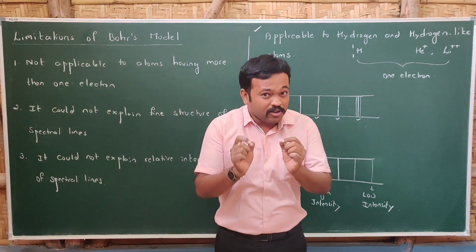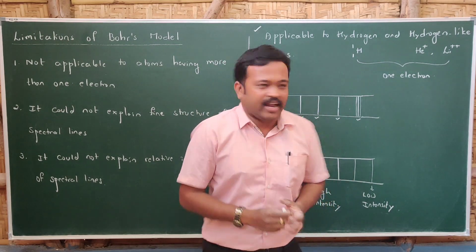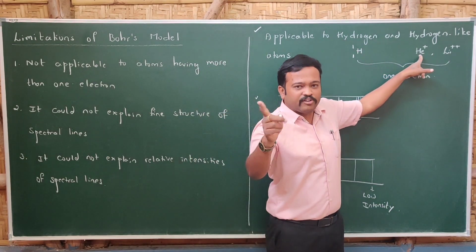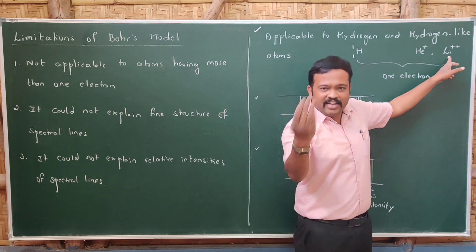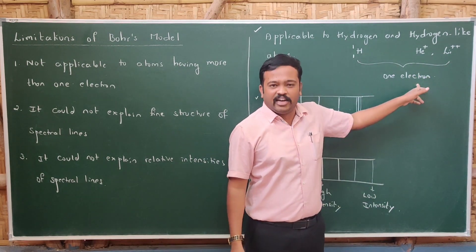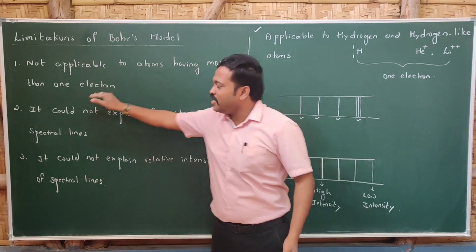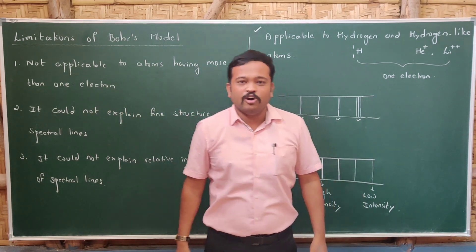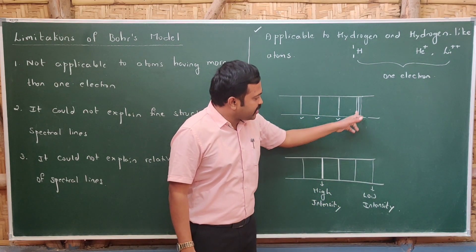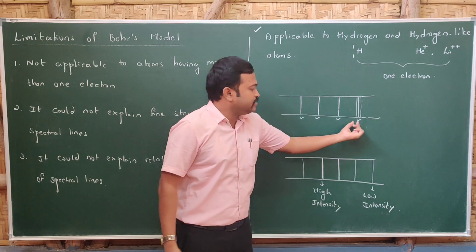Now let us look at the limitations of Bohr's model. Bohr's model is applicable only to atoms having a single electron, such as hydrogen and hydrogen-like atoms. For example, helium (He⁺) with one electron removed, or lithium (Li²⁺) with two electrons removed, are valid. But it cannot be applied to atoms with more than one electron. Also, Bohr's model could not explain the fine structure of spectral lines.